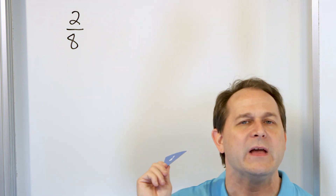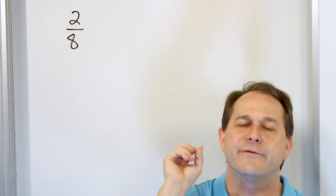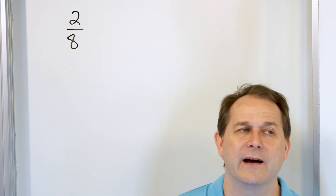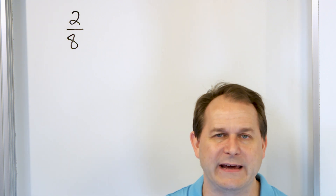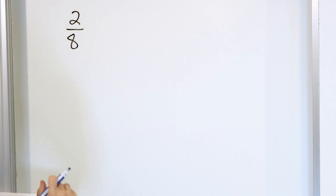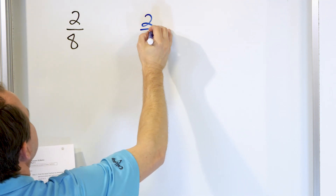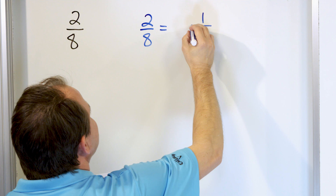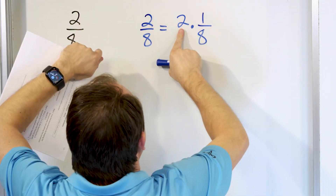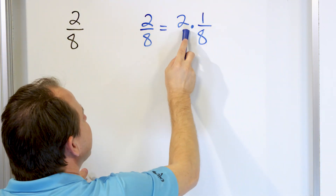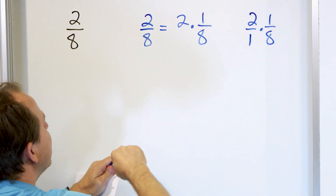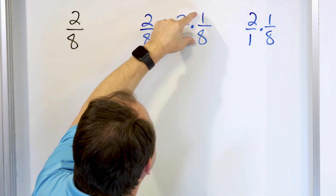I want us to write the fraction 2/8ths two different ways: first as a multiplication equation, and then in terms of addition. 2/8ths is equal to 1/8th times 2. You can write this as 2 over 1 times 1/8th. When you multiply, 1 times 2 is 2, and 1 times 8 is 8. So it makes perfect sense that this fraction is equal to 1/8th times 2. That's why it's called multiples.